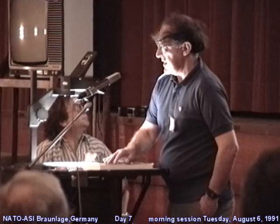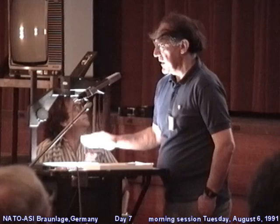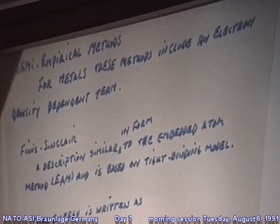Regarding semi-empirical methods, I want to mention quickly Finnis and Sinclair — I'm not going to deal with their method in detail, but it's based on tight binding theory. It looks a lot like the embedded atom method, and it has two pieces: an energy that depends on the electron density, and a pair repulsion term. They get their electron density from overlap with atomic wave functions.